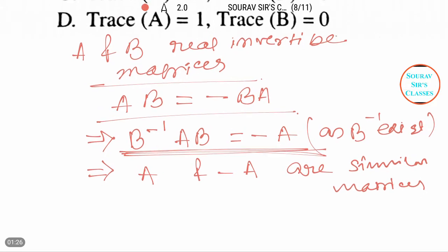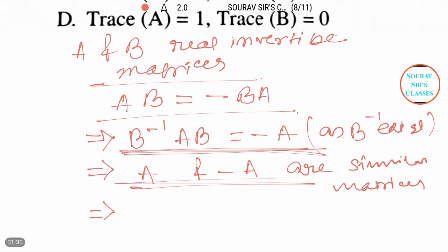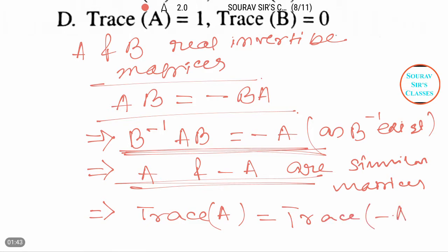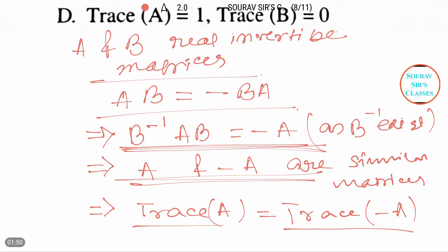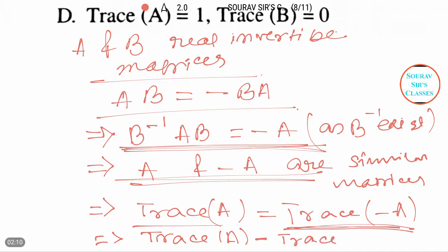Now, since they are similar matrices, we can write trace(A) equals trace(minus A). These are equal. In the next step, we can write trace(A) plus trace(minus A) equals zero, which simplifies to 2·trace(A) equals zero.